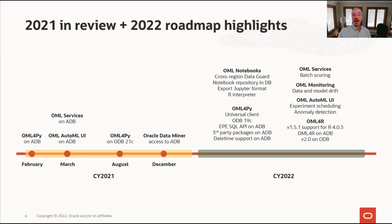A new monitoring interface for data and model drift detection is expected on Autonomous Database. Later in 2022, plans include augmenting OML for Python to programmatically deploy in-database models to OML Services, new algorithm APIs, transparency layer enhancements including data preparation and statistical methods, scheduling experiments in the AutoML UI, and adding automated anomaly detection to AutoML in addition to currently supported classification and regression. Ongoing integration efforts include Oracle Analytics Cloud, Oracle Data Integrator, OCI Data Catalog, and OCI Data Science.